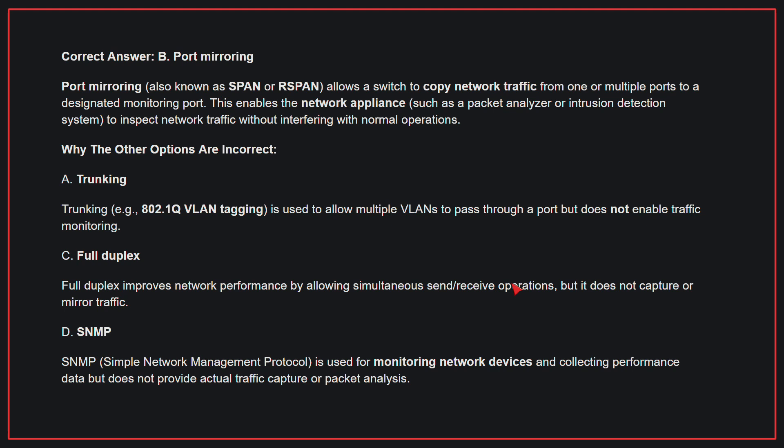Why the other options are incorrect: A, trunking. Trunking is used to allow multiple VLANs to pass through a port but does not enable traffic monitoring. C, full duplex. Full duplex improves network performance by allowing simultaneous send and receive operations, but it does not capture or mirror traffic. D, SNMP. SNMP is used for monitoring network devices and collecting performance data, but does not provide actual traffic capture or packet analysis. Therefore, the correct answer is B: Port mirroring.